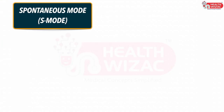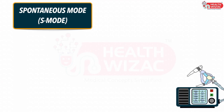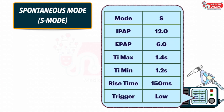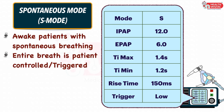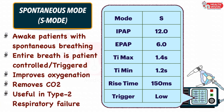Next is S mode or Spontaneous mode, which is specific for small BiPAPs only. In this, we set: IPAP (Inspiratory Positive Airway Pressure), EPAP (Expiratory Positive Airway Pressure), Inspiratory Time maximum and minimum settings, Rise Time, and Trigger Sensitivity depending upon the patient condition. This mode is used in awake patients with spontaneous breathing. In this mode, the entire breath is patient-controlled or patient-triggered. Spontaneous mode improves oxygenation, removes carbon dioxide, and is very useful in type 2 respiratory failure.